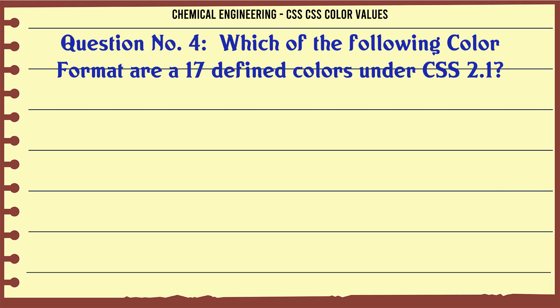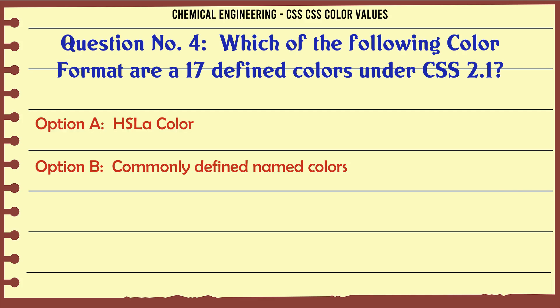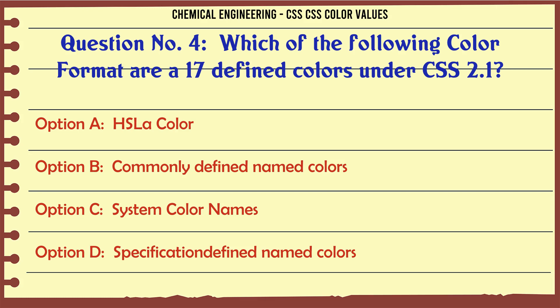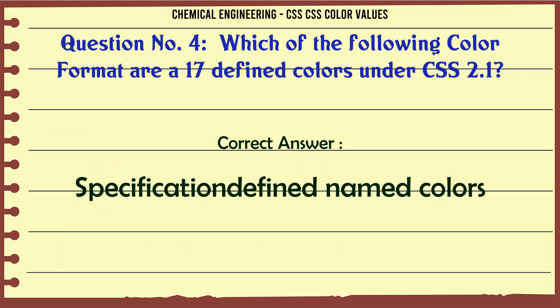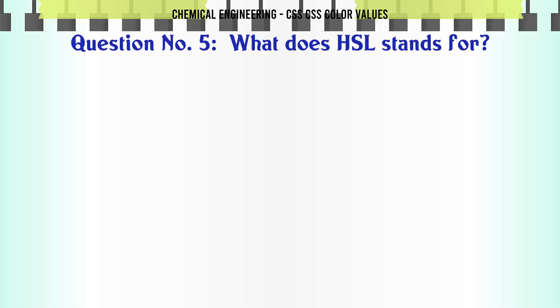Which of the following color formats are the 17 defined colors under CSS 2.1? A: HSLA color. B: commonly defined named colors. C: system color names. D: specification defined named colors. The correct answer is: specification defined named colors.